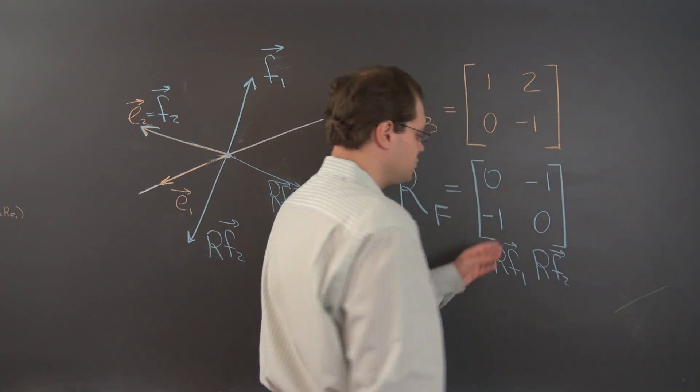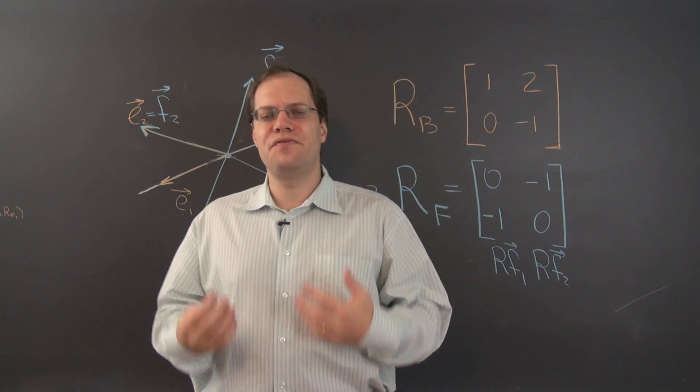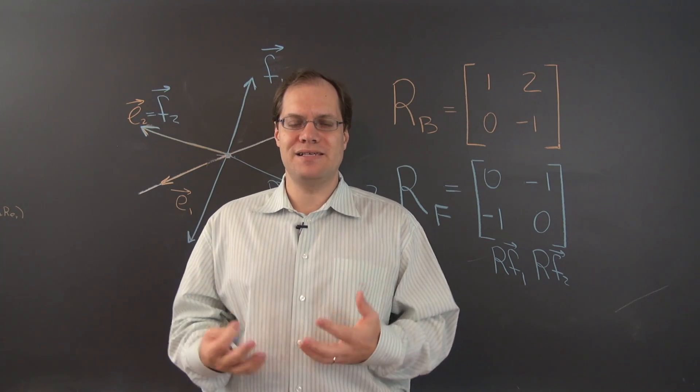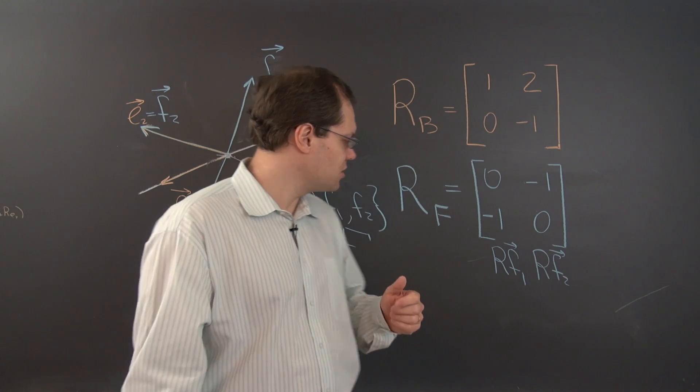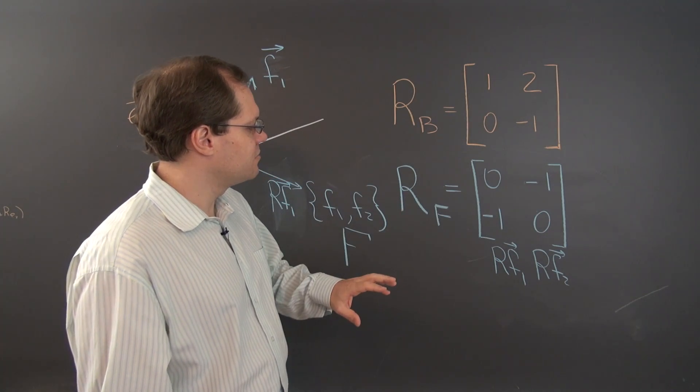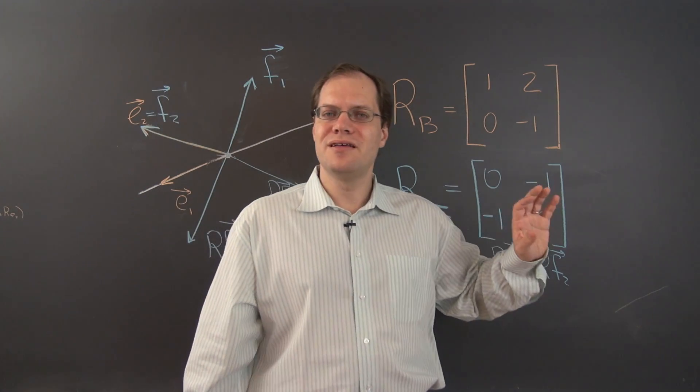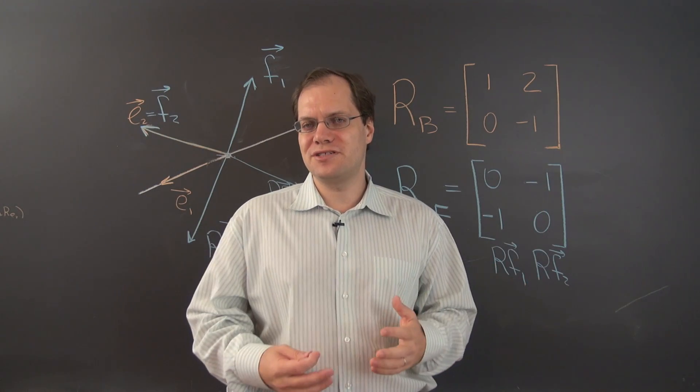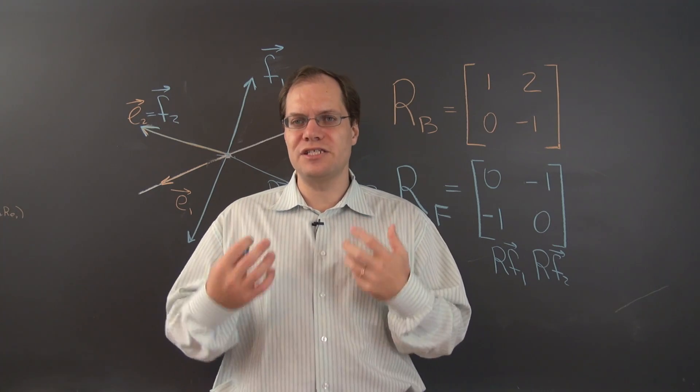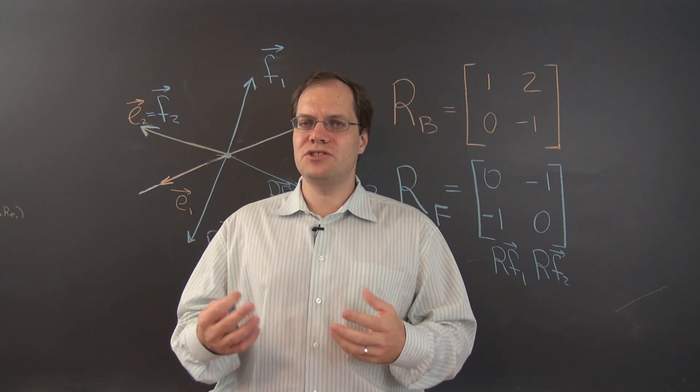And this matrix represents the very same linear transformation but in another basis. So one thing that we notice is that the numbers have changed completely. Not one number is the same. So the matrix is completely different but it represents the very same linear transformation. So what has changed? We have changed the basis.